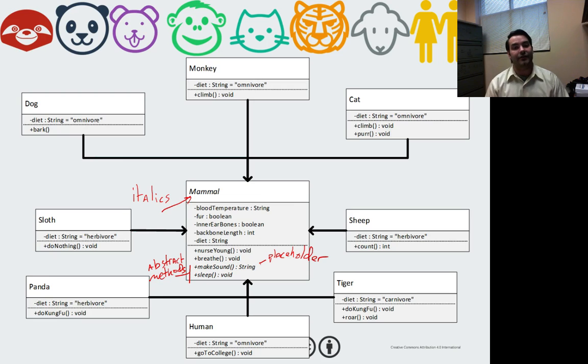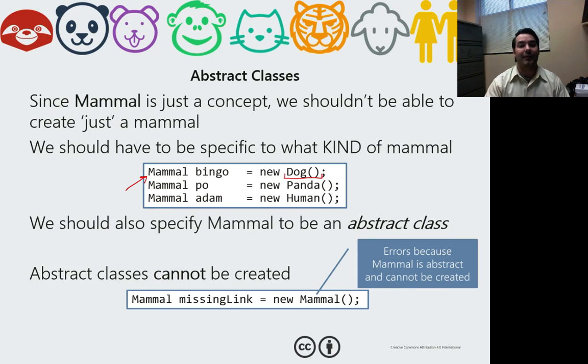So again, dog inherits from mammal. So I can go mammal equals new dog, or mammal bingo equals new dog. Mammal poe equals new panda. Mammal atom equals new human. The one thing I can't do is I cannot say mammal equals new mammal. Again, because mammal is a concept. So I can't just make a mammal. They don't exist. So what we have to do is explicitly pick out one of its subclasses, one of its child classes to implement from.